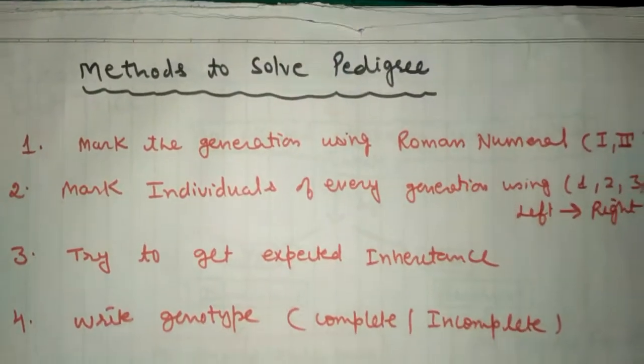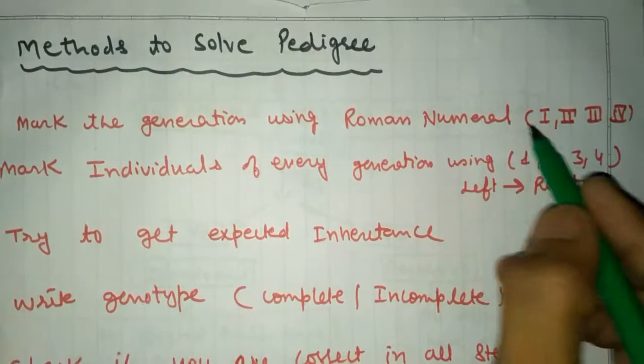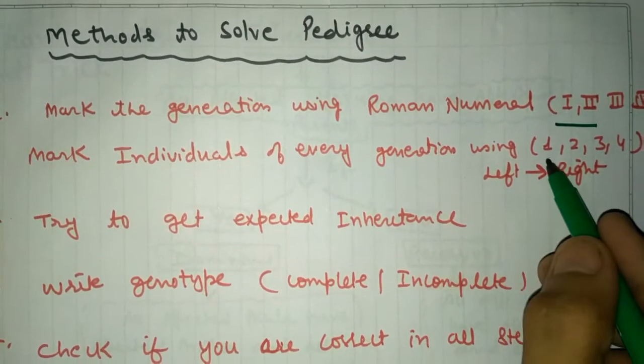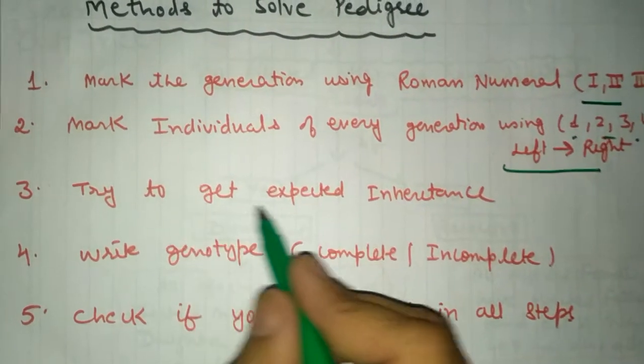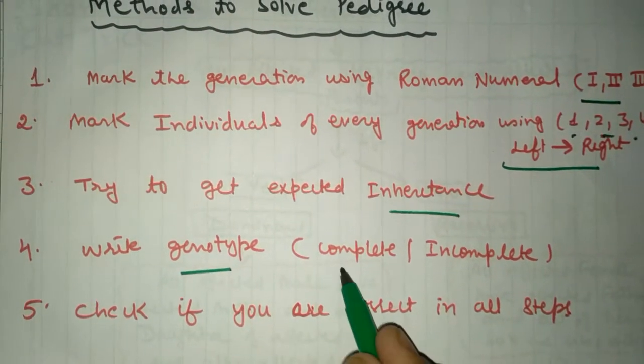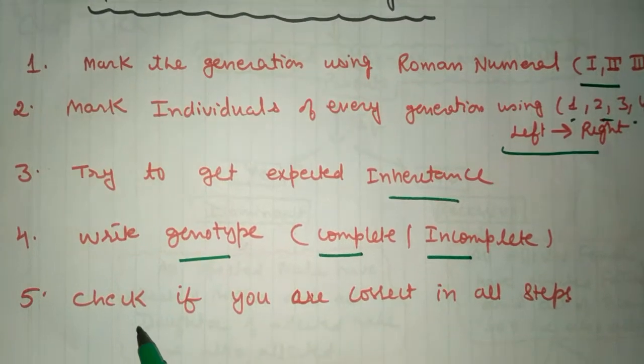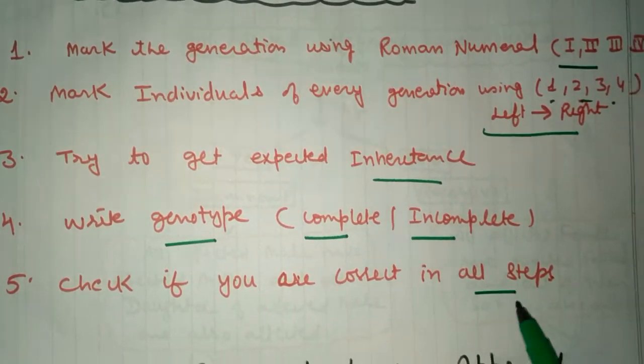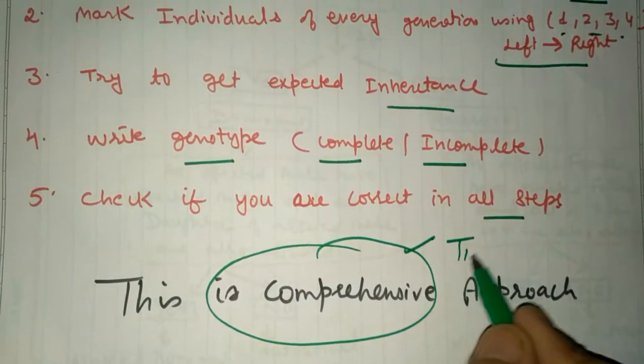Next is the method to solve the pedigree. First, mark the generation with Roman letters. Second, mark the individuals with 1, 2, 3, 4 from left to right. Try to get the expected inheritance. Write the genotype, whether it is available, complete or incomplete. And last, check if you are correct in all the steps. This type of method is a comprehensive approach and it is time-consuming.